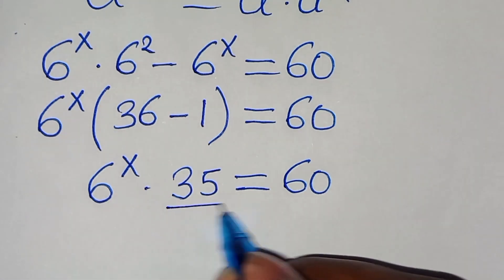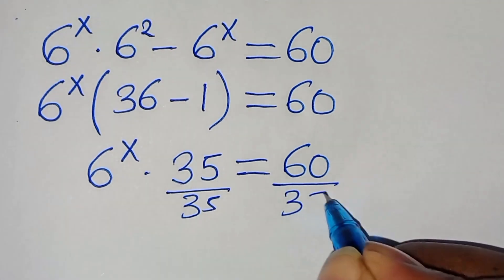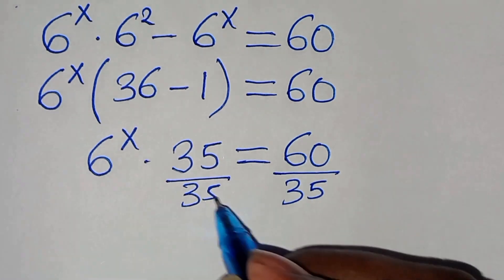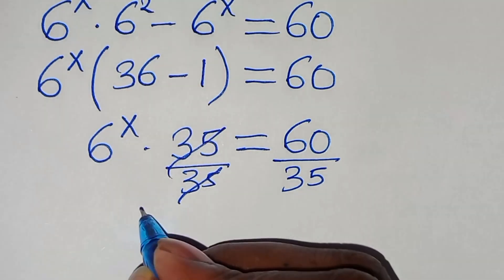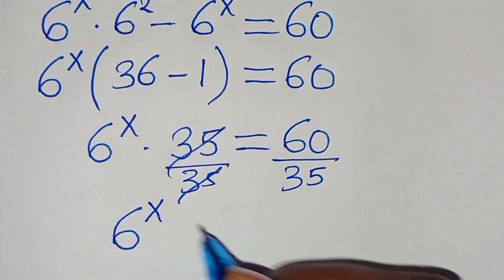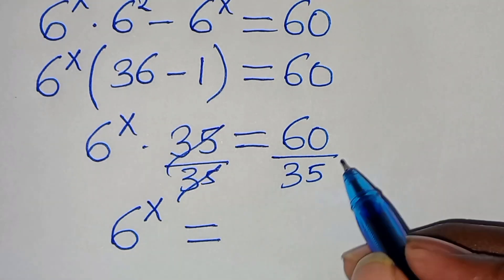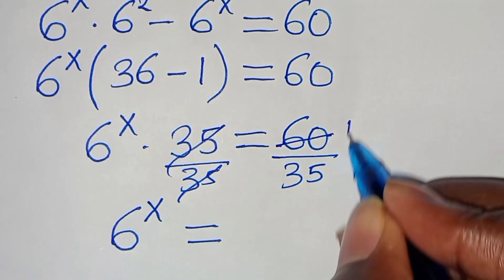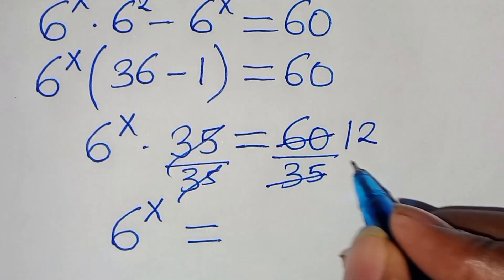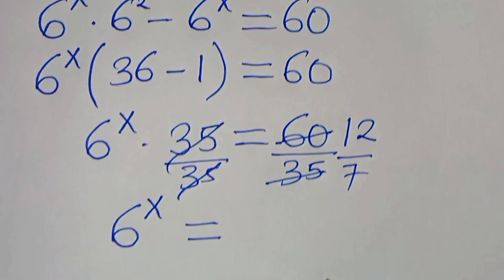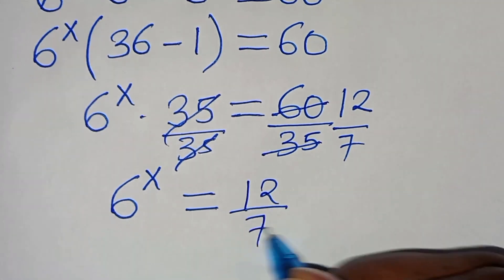Now let's divide both sides by 35. We can simplify — 35 and 60 share a factor of 5 — so that now 6 to the power of x is equal to: 60 divided by 5 is 12, and 35 divided by 5 is 7. So we have 6 to the power of x equals 12 over 7.